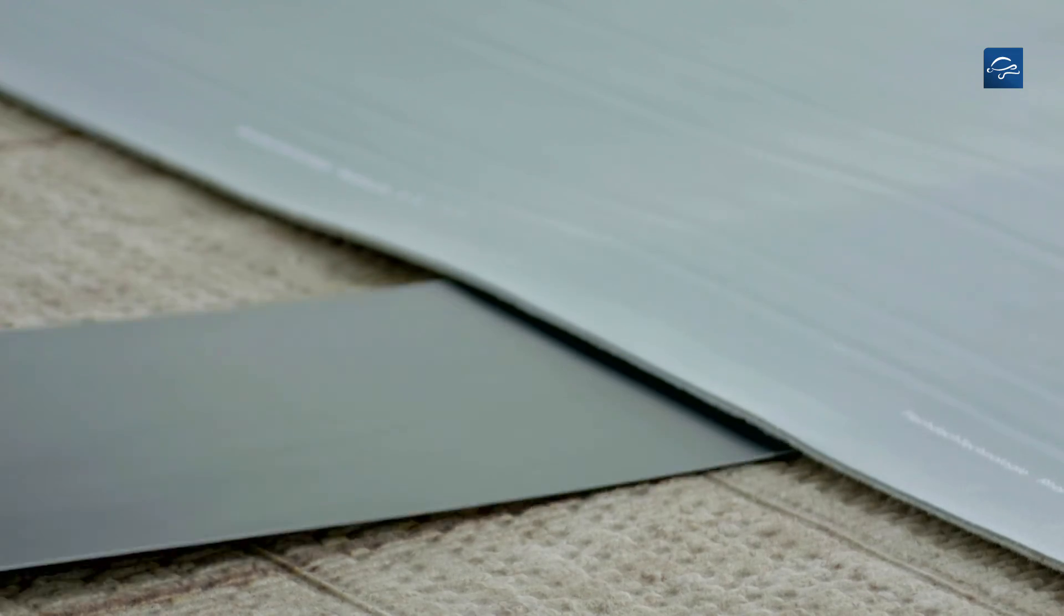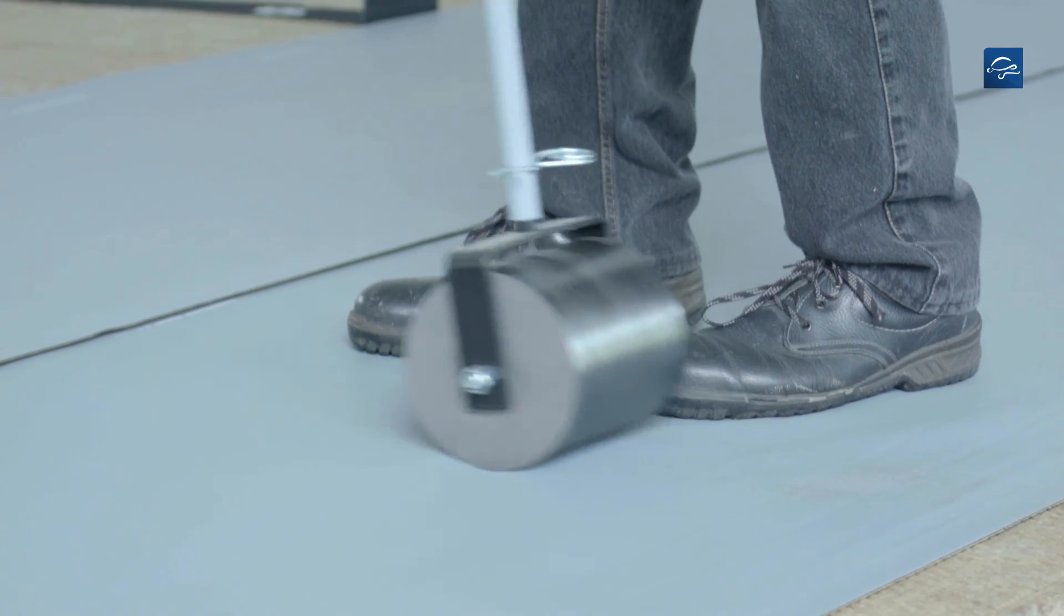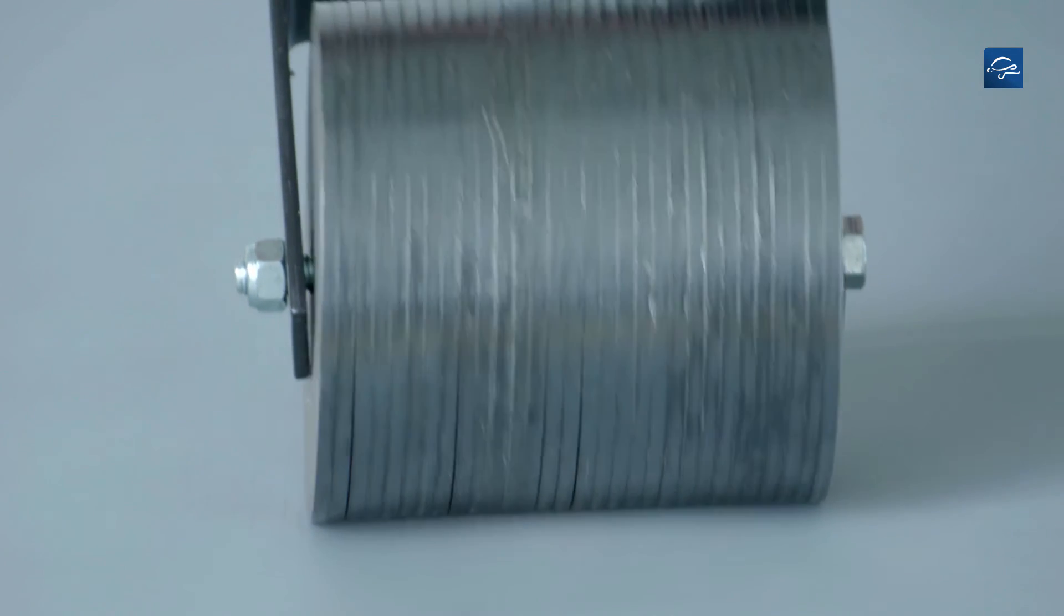Then remove the metal sheets for the hooks and loops to engage. Finally, securely fasten the membrane by pressing on the GripFix strip at least twice using the universal roller.